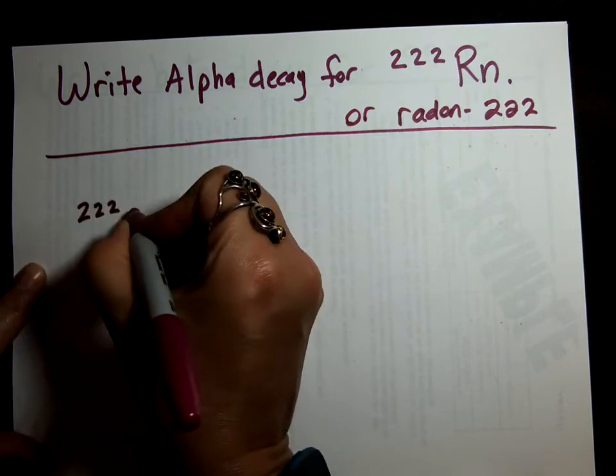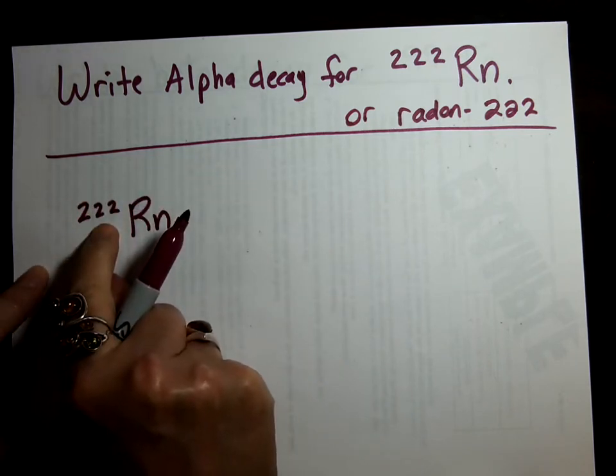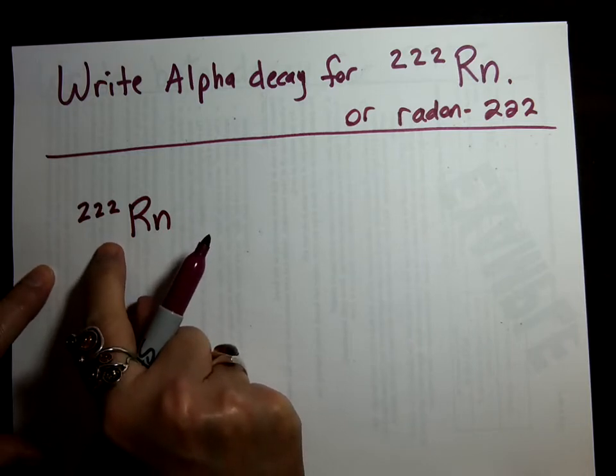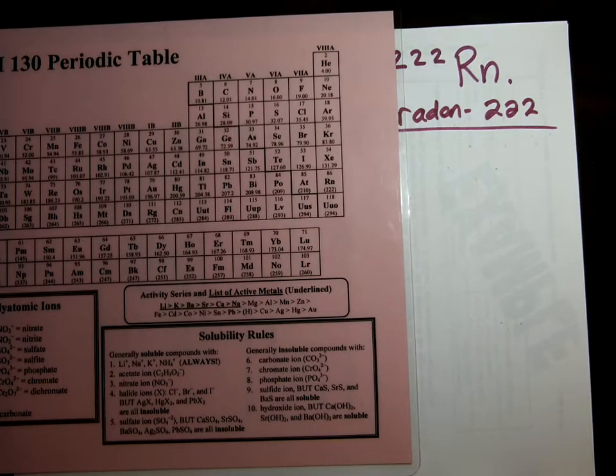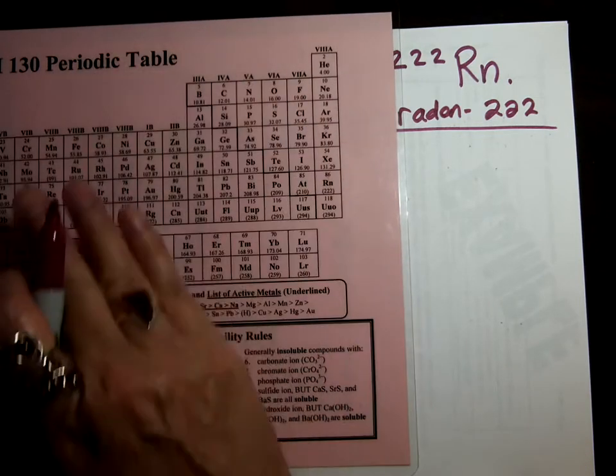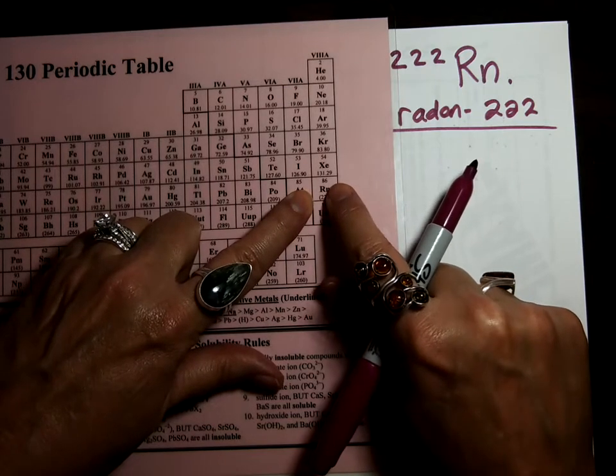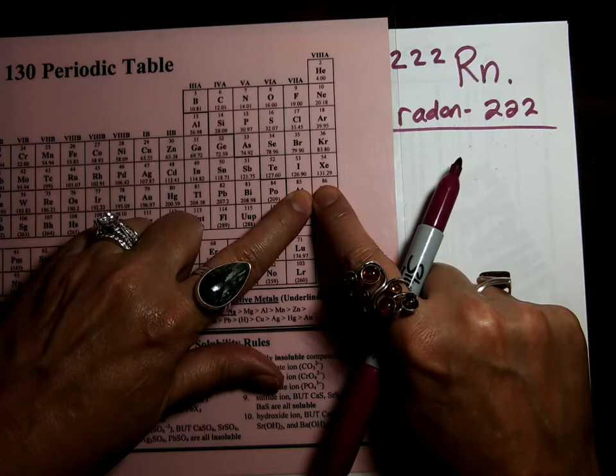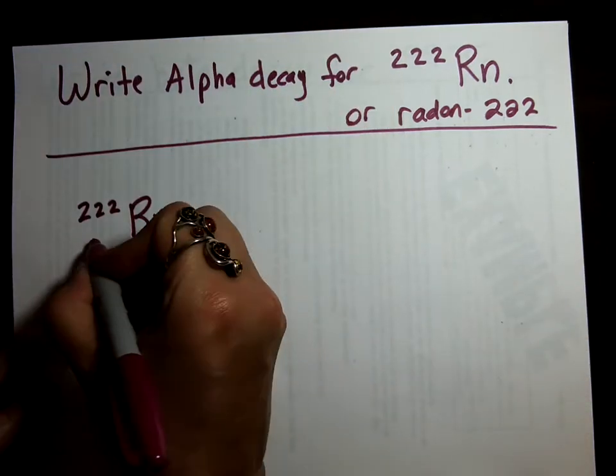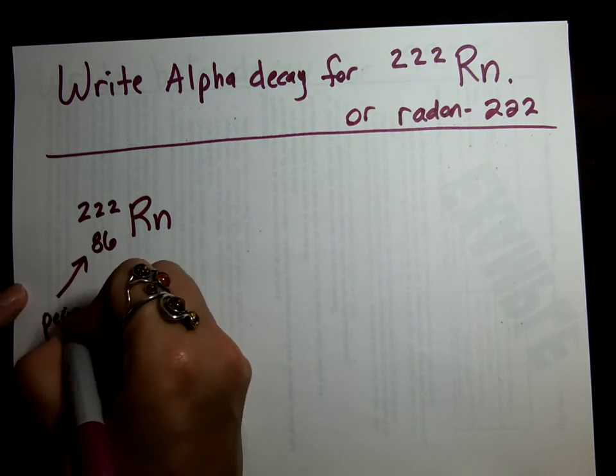222 is, in fact, the mass number. So it goes on top. We need to figure out the protons, the bottom number for Rn. So we get our periodic table and we look for Rn. And we see here it is. It's number 86. 86 is the proton number. So that is the bottom number, 86. We got that from the periodic table.